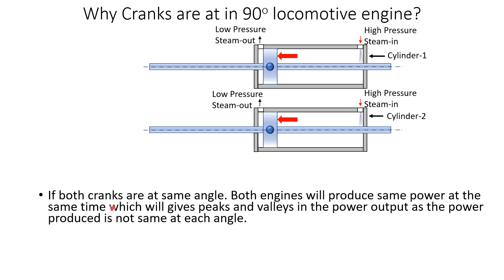If both cranks are kept at the same angle, both engines produce peak power at the same time, giving peaks and valleys in the power output since power produced is not the same at each crank angle.